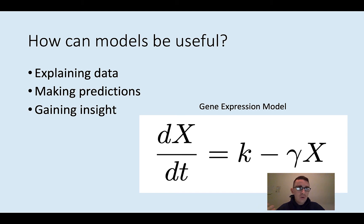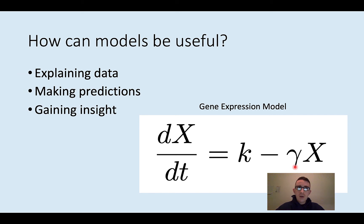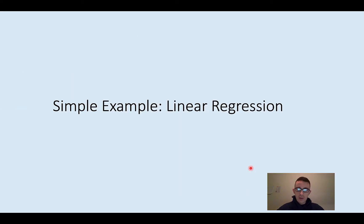All of these things start with explaining the data, and that's where parameter estimation comes in. As an example, I have this gene expression model I've talked about in other videos. We have some gene X, and depending on what you're studying, this could be the RNA being transcribed from the gene or the production of the protein. There's some production term k and some degradation term gamma. At some point, for this to be useful, we need to actually look at data and estimate these two parameters k and gamma.